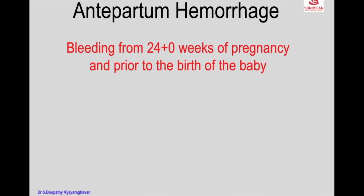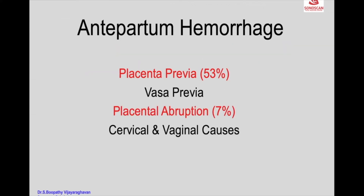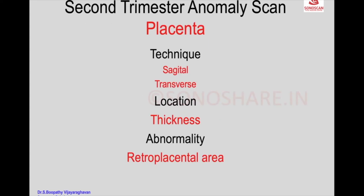Antepartum hemorrhage is bleeding from 24 plus 0 weeks of pregnancy up to the birth of the baby. It occurs in a small number of cases, and the cause is not known in about 40% of cases. We have to look specifically for the retroplacental area and look for an accessory lobe. All these are important in the diagnosis of APH.